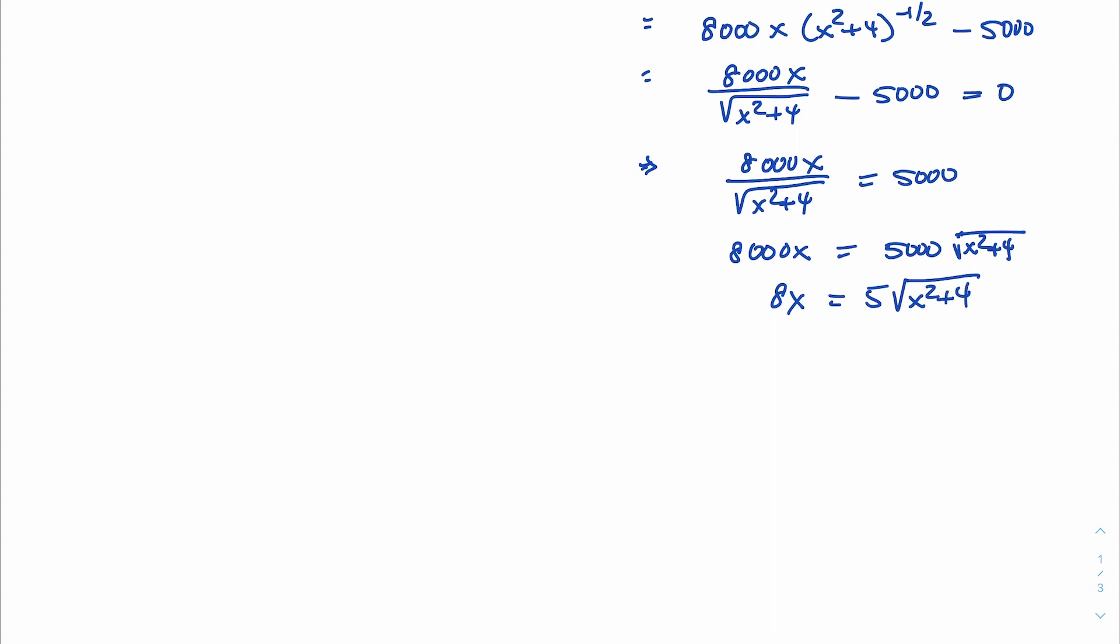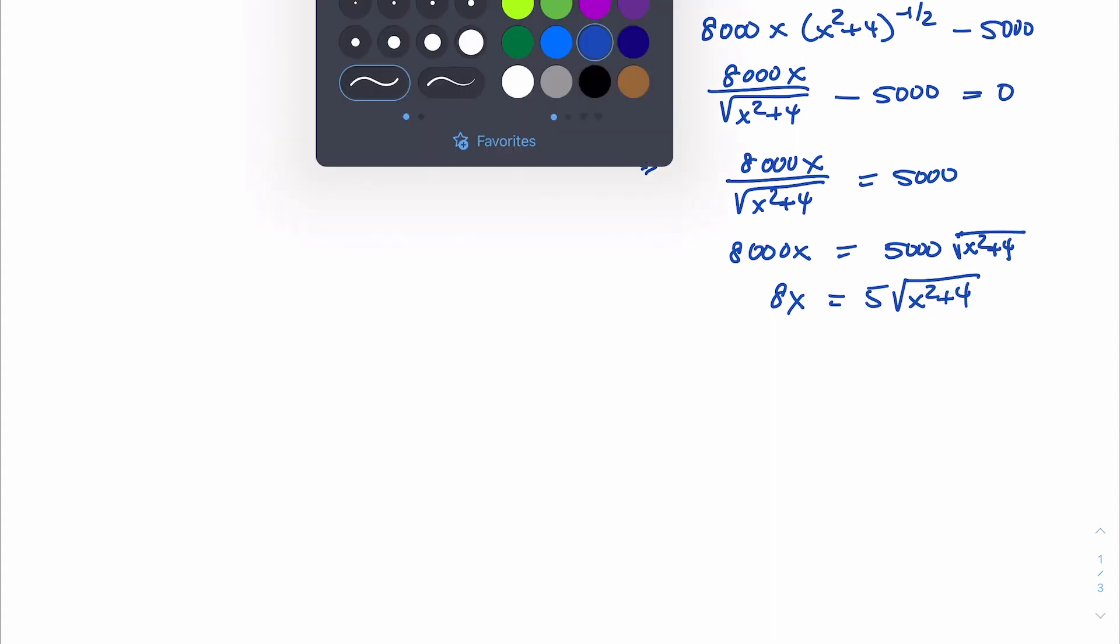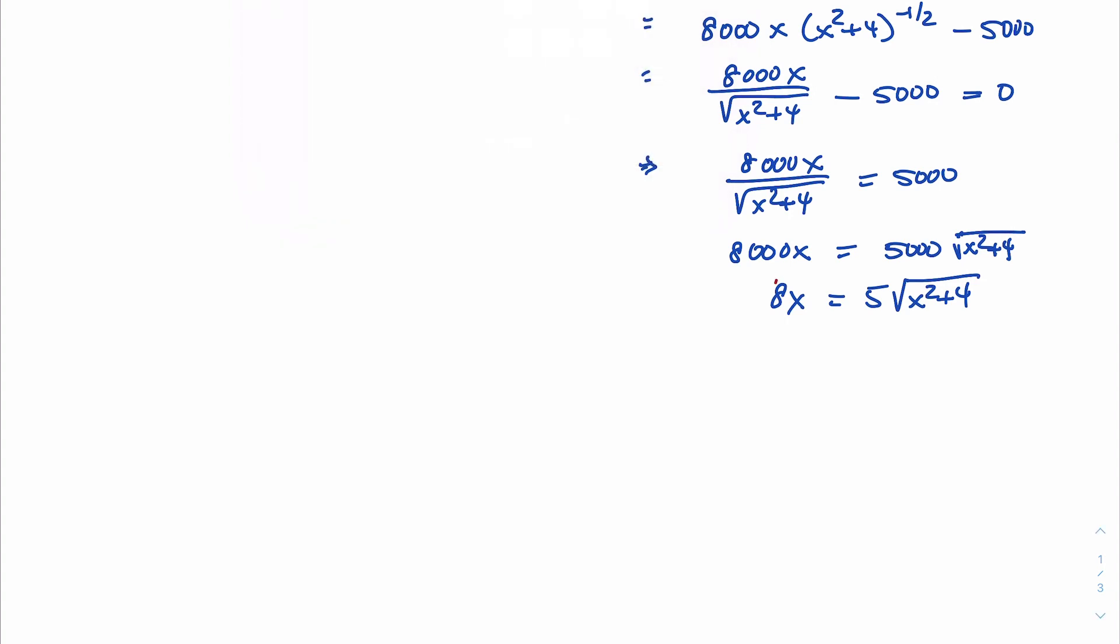And now to solve for x. This is an old trick. You might remember from your algebra experience, we're going to square both sides. And after squaring both sides, let's see what we end up with here. So this is 64x squared equals 5 squared is 25. And the square root squared is just what's under the radical. So we have that going to distribute the 25.